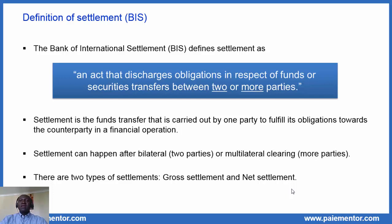As stated in the definition, settlement can happen between two parties — that's the case after bilateral clearing — or between more parties, as is the case after multilateral clearing. There are two types of settlements: gross settlement and net settlement.